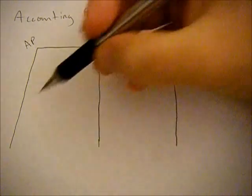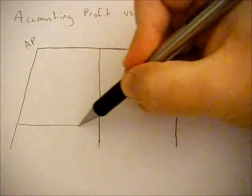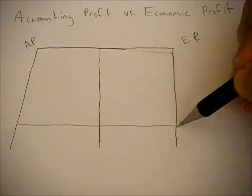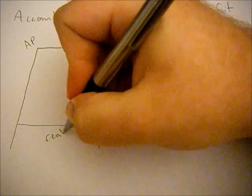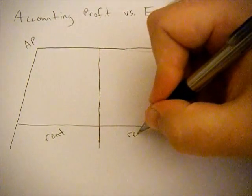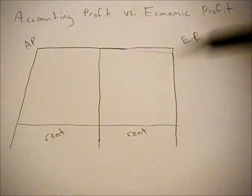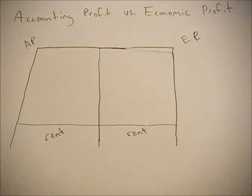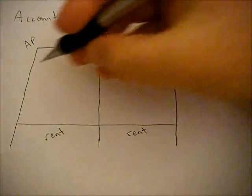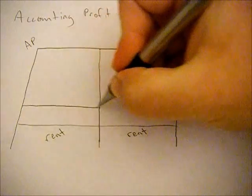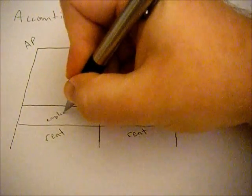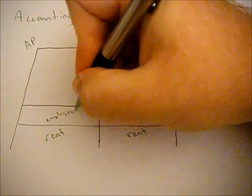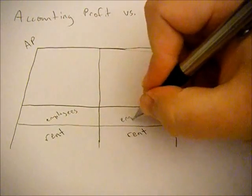First, you have to pay rent. Renting a building is going to be an explicit cost that occurs under both scenarios. You also have to pay employees, which is another explicit cost that applies under both conditions.